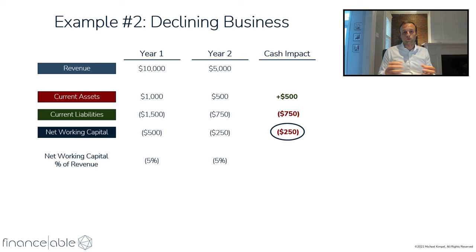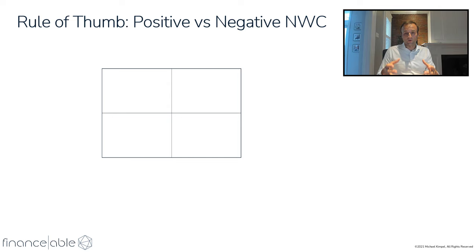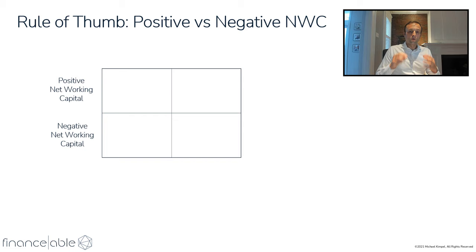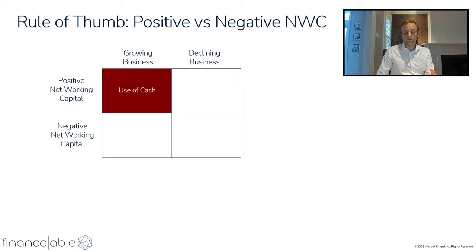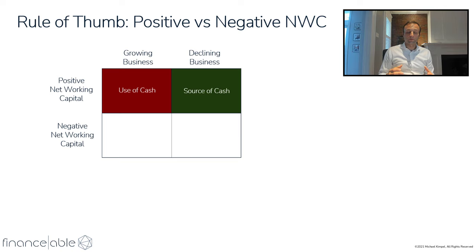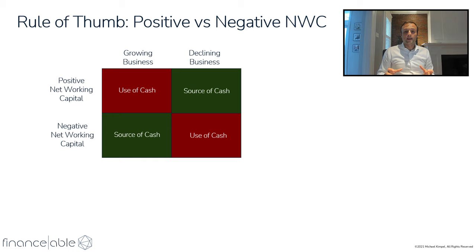I know I just threw a lot at you, but we can simplify this with a framework — with the one catch that working capital must remain proportional to sales. Looking at all four scenarios: a positive working capital business will use cash as it grows, but when it declines, it's a source of cash. Conversely, a negative working capital business generates extra cash as it grows, but as it declines, it requires cash inflows to fund the liabilities coming due. Neither positive nor negative working capital is inherently good or bad — you just have to understand the trajectory of the business, because both are double-edged swords.